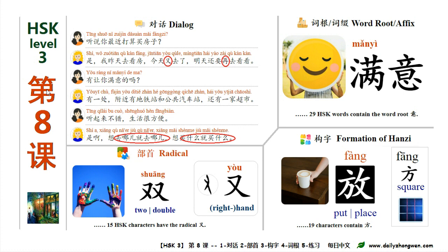Hi everyone, welcome to daily中文, 每日中文. Today, let's study Lesson 8: 你最近打算买房子? In HSK Level 3, in this lesson, we will learn a dialogue and related grammar points, the radical 又, the component 方, and the word root 义.